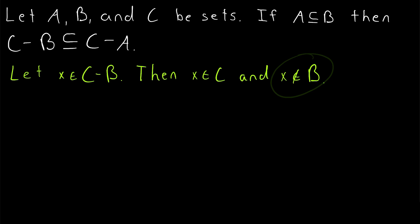So since we know x is an element of C, if we can show that x is not an element of A, that will mean that x is an element of C minus A, which is what we want to show, because that will prove this subset relation.